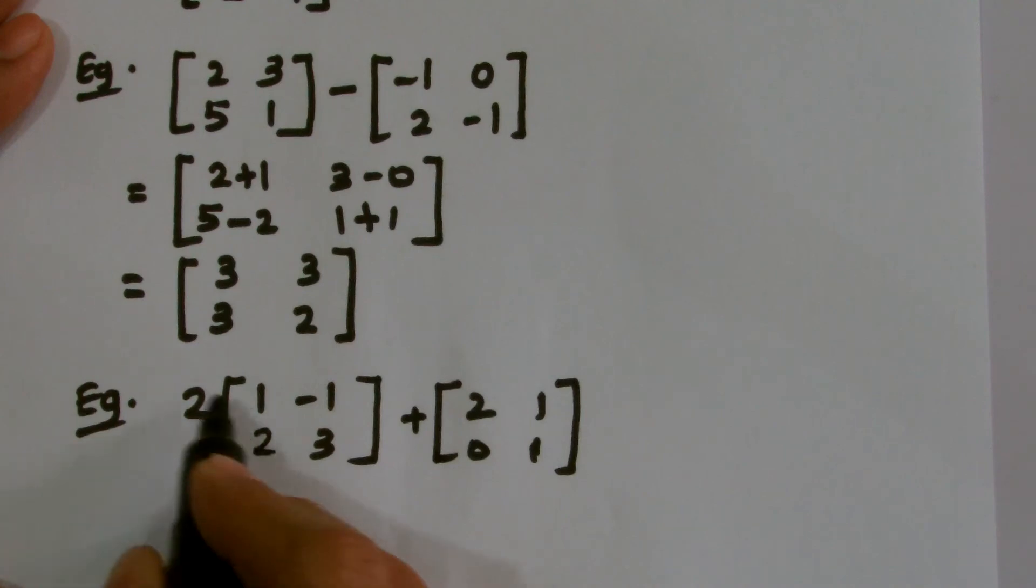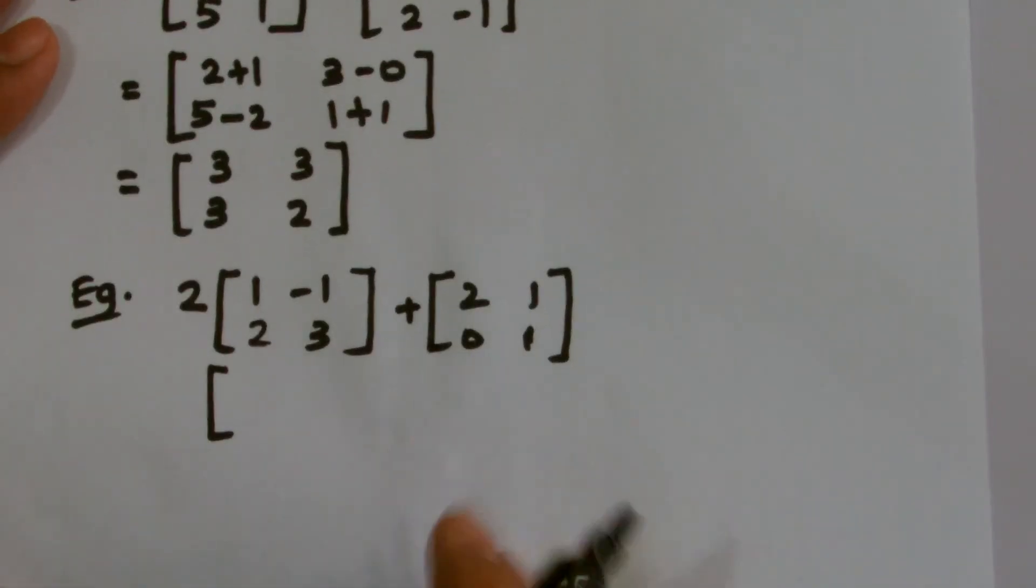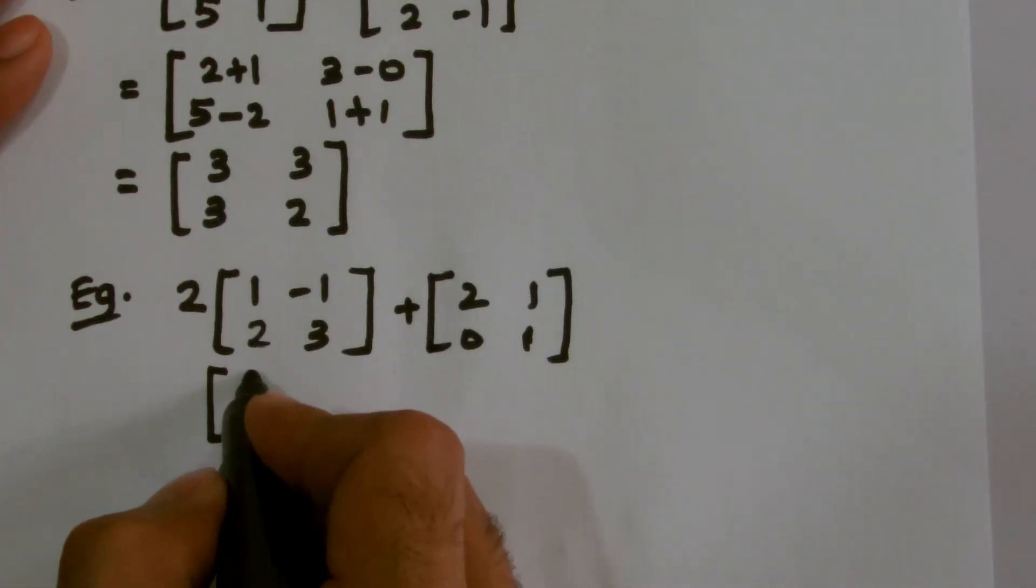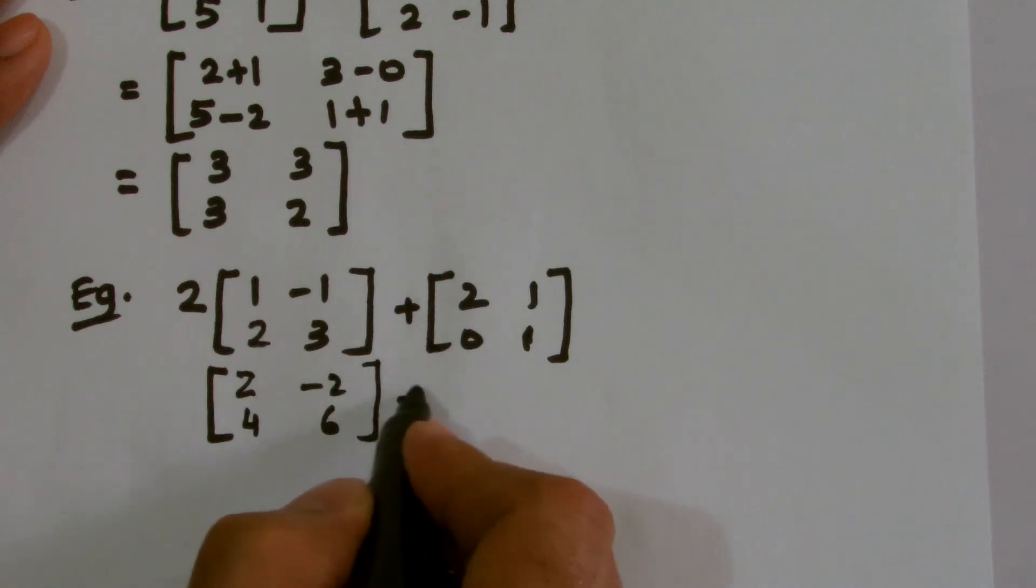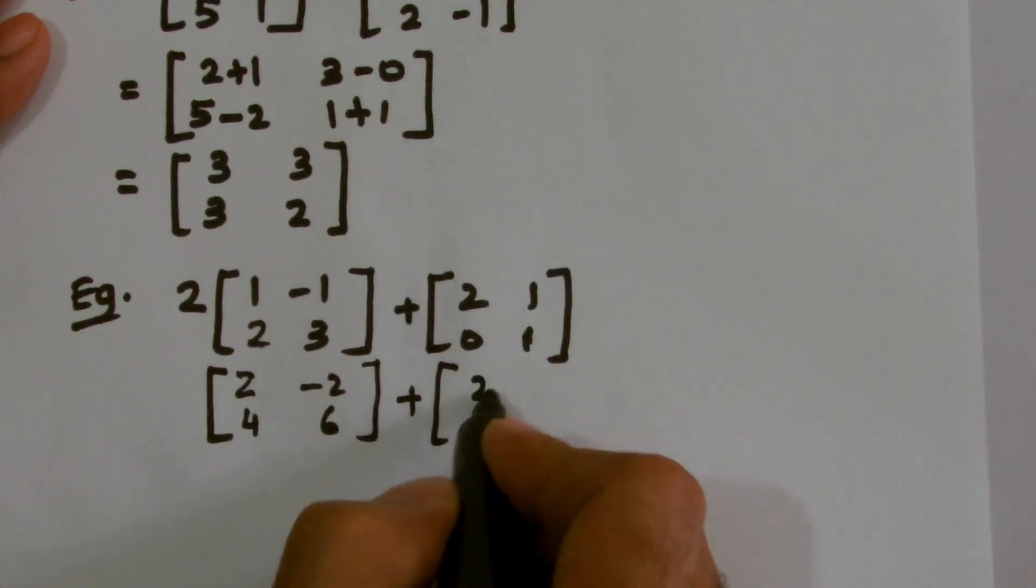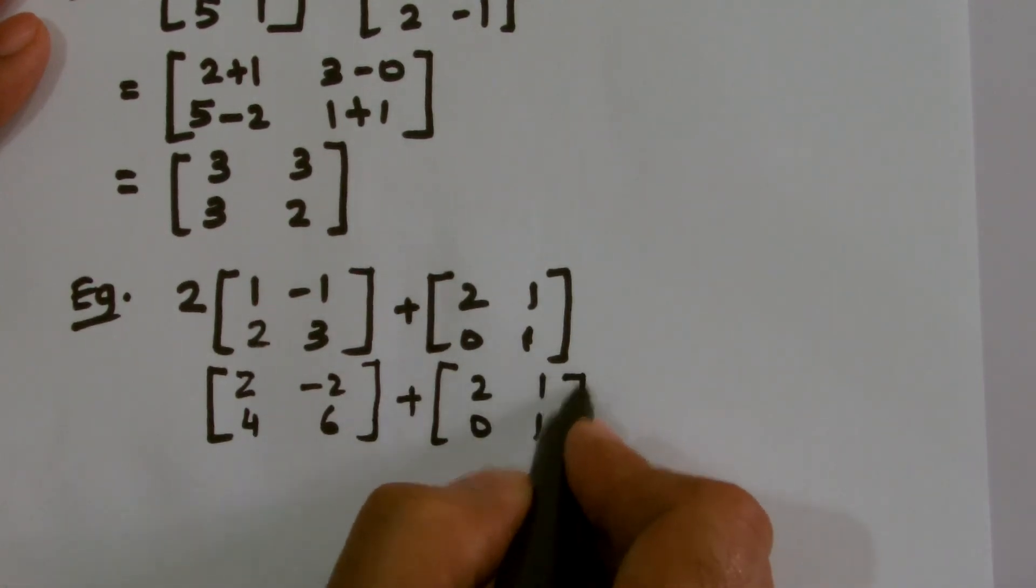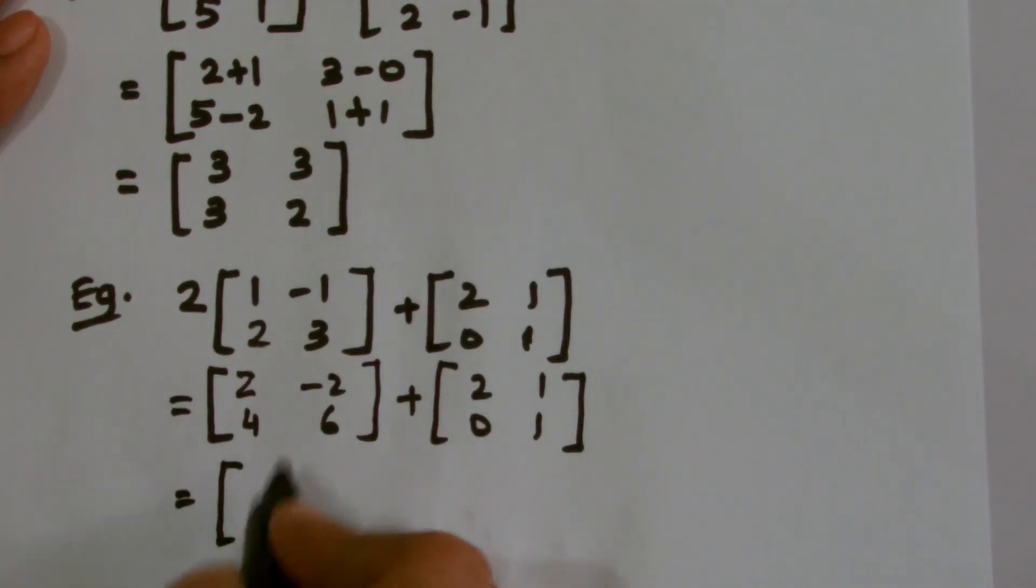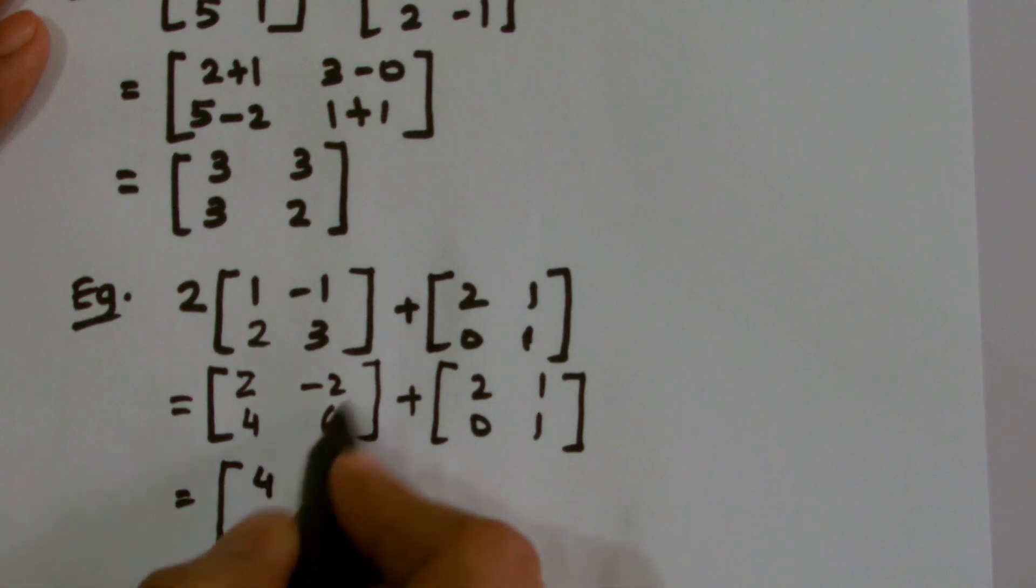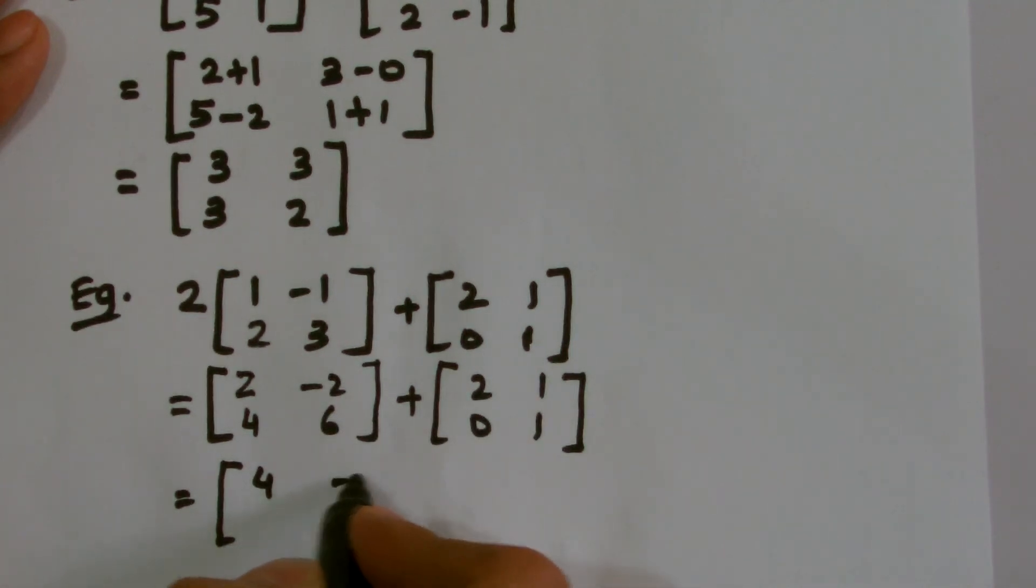So we get 2 into 1, 2. 2 into minus 1, minus 2. 2 into 2, 4. 2 multiplied by 3, we get 6. When we add 2, 0, 1, 1, the result is 2 add 2 I get 4, minus 2 add 1 I get minus 1, 4 add 0 I get 4, and 6 add 1 I get 7. That's how we are going to simplify it.